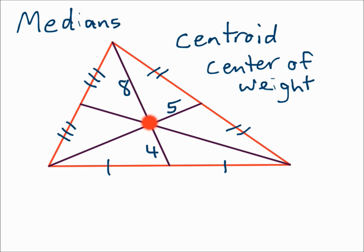On another median, if that length is five, then the other one would be ten. If that one is seven, then that one is fourteen. Since the centroid is two-thirds of the way over, it splits each median where one part is twice as much as the other part. The longer part is the part that goes from the centroid side to the vertex.